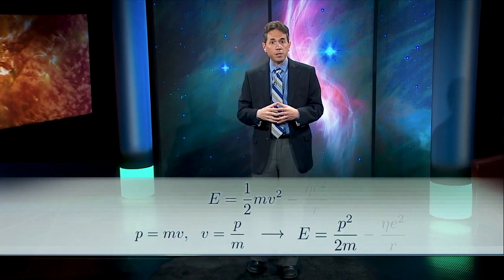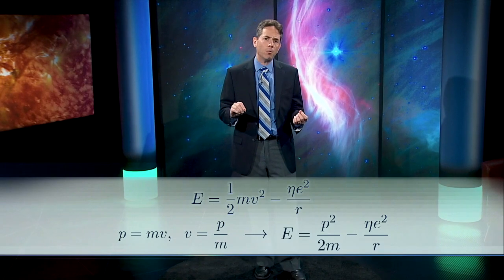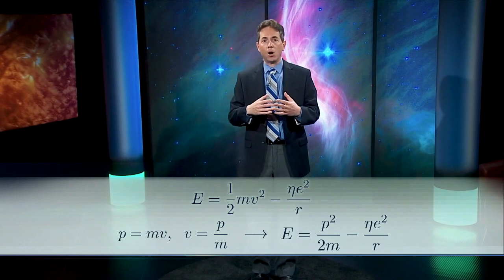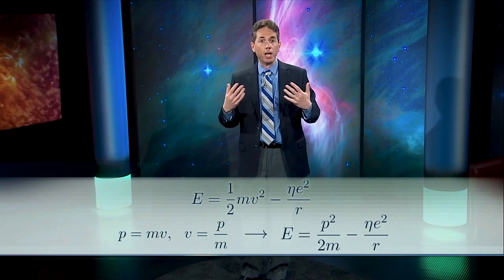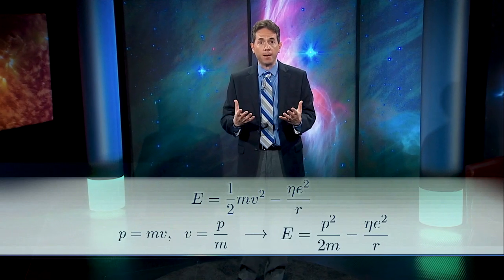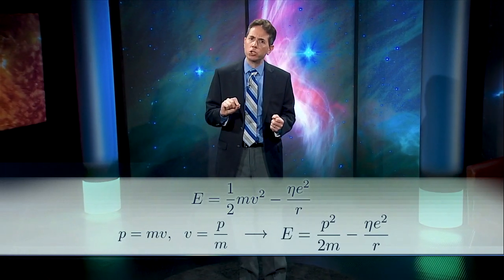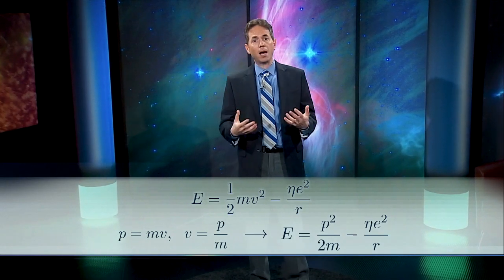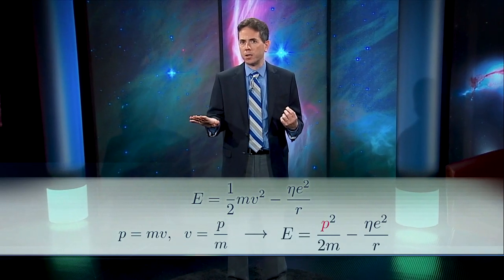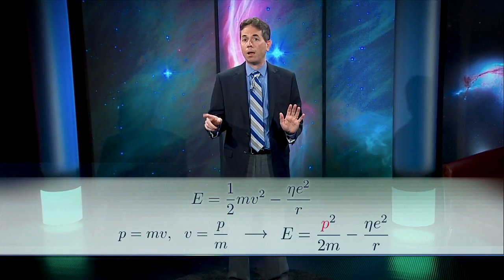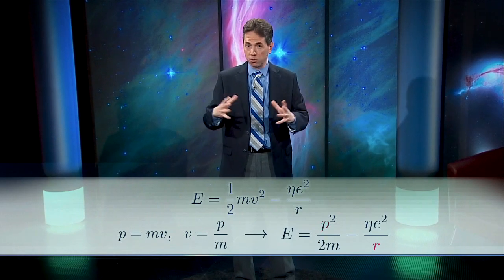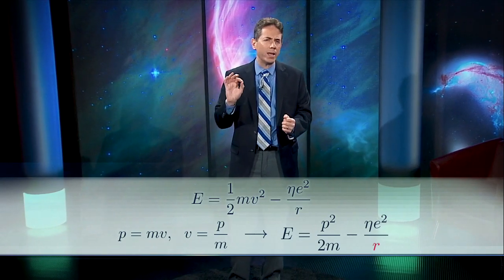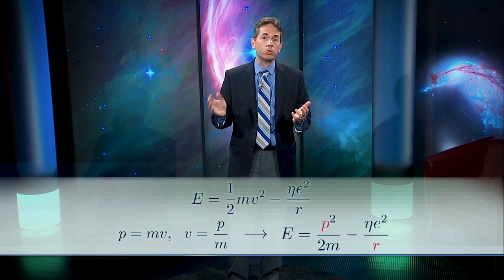In quantum theory, the electron cloud extends over a range of r and has a range of possible values of p. But still, for any particular combination, this equation for the total energy still holds. Now, to minimize E, we should keep p as low as possible. That will reduce the kinetic part. And we should also make r as small as possible, because that will reduce the potential energy. It will make it more negative. But we can't make both r and p arbitrarily small. Remember?